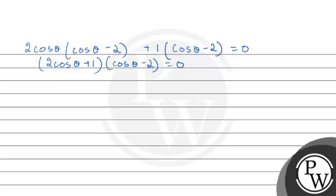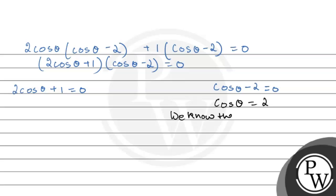This gives us two equations: equation 1 is 2 cos theta plus 1 equals 0, and equation 2 is cos theta minus 2 equals 0, giving cos theta equals 2. However, we know that cosine theta must satisfy minus 1 ≤ cos theta ≤ 1, so cos theta equals 2 is not valid and we discard that solution.